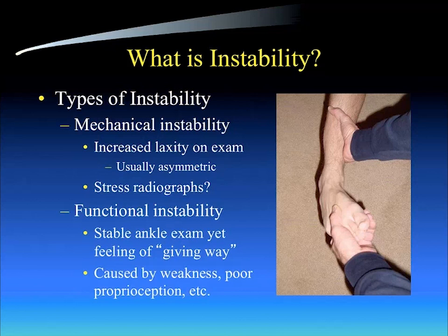The first question we have is, what is instability? There are different types. One is mechanical instability — this is where you'll notice increased laxity on examination of the patient. It's usually asymmetric, and with the patient relaxed, you can actually test for an anterior drawer or an inversion instability. If you detect significant gross instability on one ankle compared to the other, that's a person with mechanical instability.